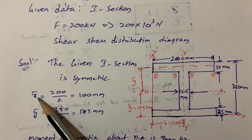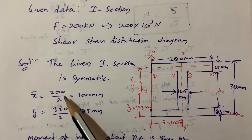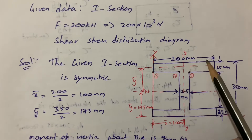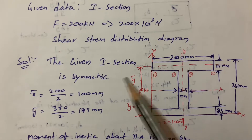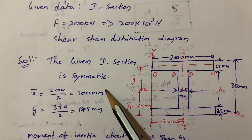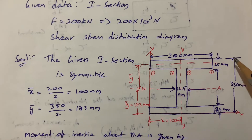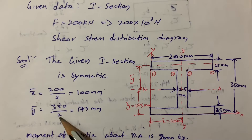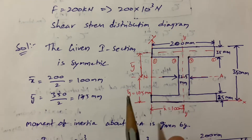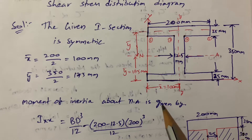x̄ is the centroid along the x-axis. The width is 200 mm, so half of that gives x̄ = 100 mm. Next, ȳ: the total depth is 350 mm, so 350 divided by 2 gives ȳ = 175 mm. After that, we have to find the moment of inertia about the neutral axis.